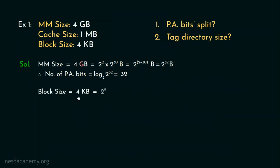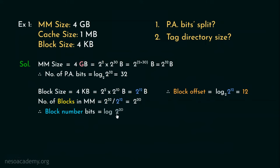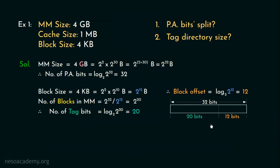The block size is given as 4KB: 4 is 2 squared and kilobytes is 2 to the power 10, so the block size in bytes is 2 to the power 12. Therefore the block offset will be 12 bits. The number of blocks in main memory is 2 to the power 32 divided by 2 to the power 12, which is 2 to the power 20, giving 20 bits for the block number. In associative mapping, block number bits are also the tag bits. So the physical address split is: 12 least significant bits for block offset and 20 bits for the tag.